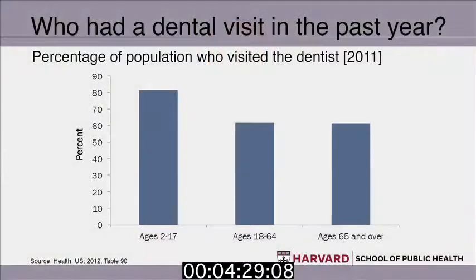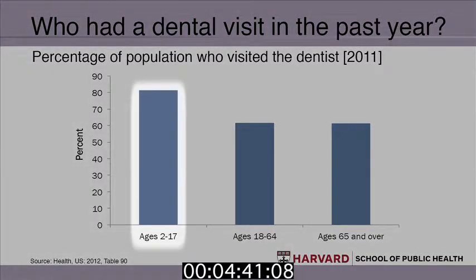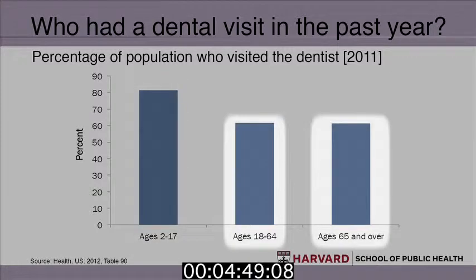So we looked at whether the number of available dentists is adequate and whether everyone has dental insurance. The last external factor for measuring access that we will consider is who actually visited the dentist. Because of some of the policies instituted early on and previously described by Dr. Tavares — like the Early Periodic Screening and Diagnostic Testing — the percent of 2 to 17-year-olds who visited the dentist in 2011 was approximately 80%. As the population ages, we see the percentage who visit the dentist decrease. For ages 18 to 64-year-olds and ages 65 and over, approximately 60% in each age group had a dental visit in 2011. These data give us a glimpse into why the dental profession and some policies have begun to look at who is not going to the dentist and why.